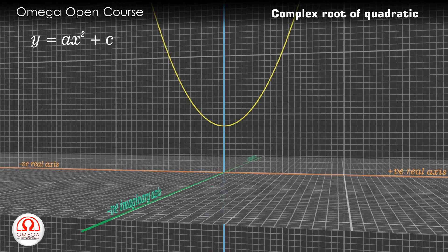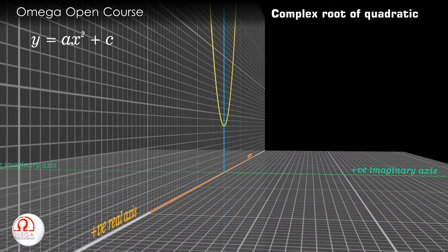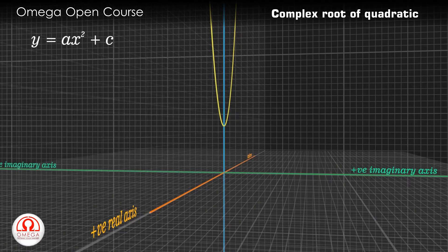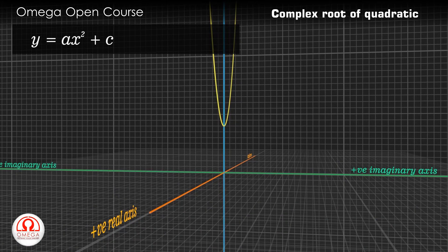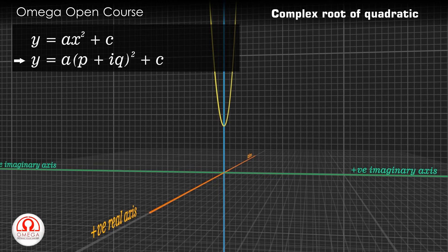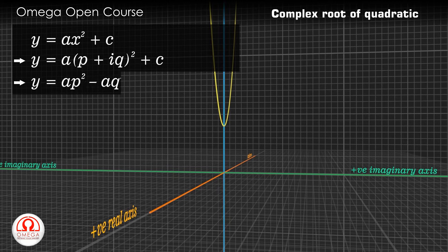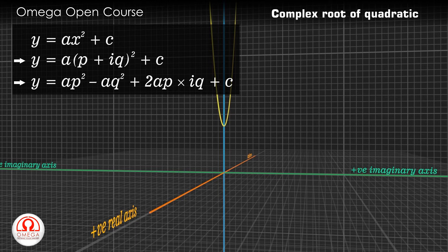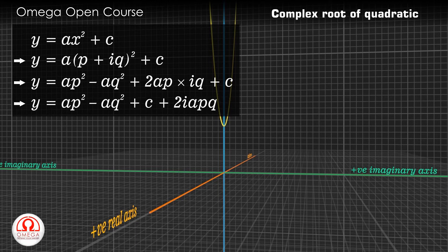Let us move around so that we are nearer to the positive direction of the imaginary axis. If any complex number satisfies this equation, then putting that complex number in place of x must make the expression 0. If we put any complex number with real part p and imaginary part q in the expression, we get y = a(p + iq)² + c. Therefore the expression on the right hand side is 0.